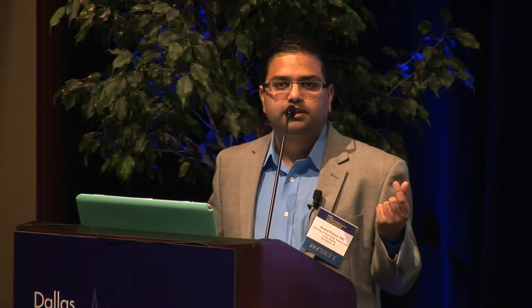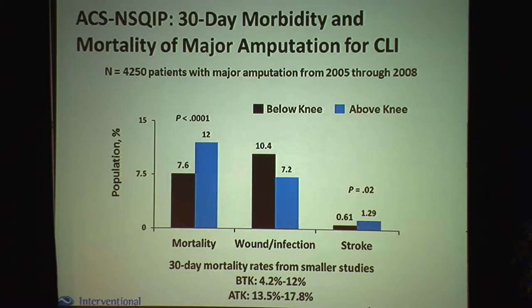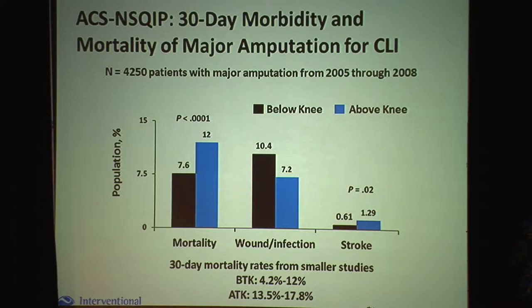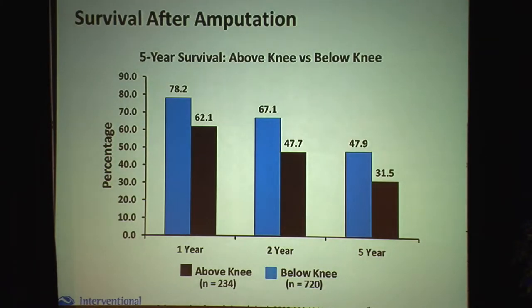This seems obvious to all of us. But if you look at the Medicare data, you see that the majority of patients with self-reported PAD or a diagnosis of PAD undergo amputation without revascularization or even angiography. And when you look at the mortality and morbidity data, you see that there are significantly increased rates of mortality, wound infection, and cardiovascular events in patients who undergo amputations — not just in the first 30 days, but if you follow them out, there's decreased survival in those patients.